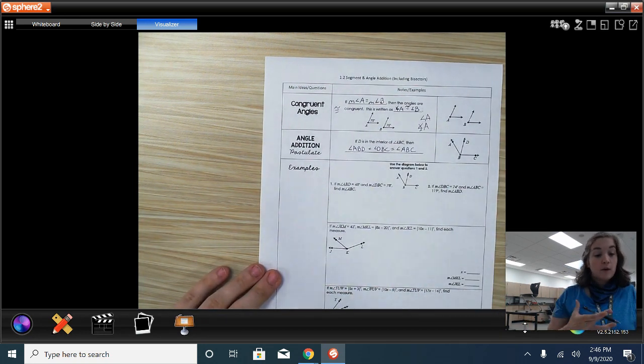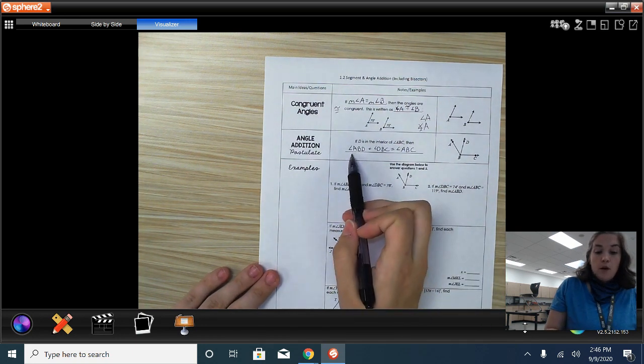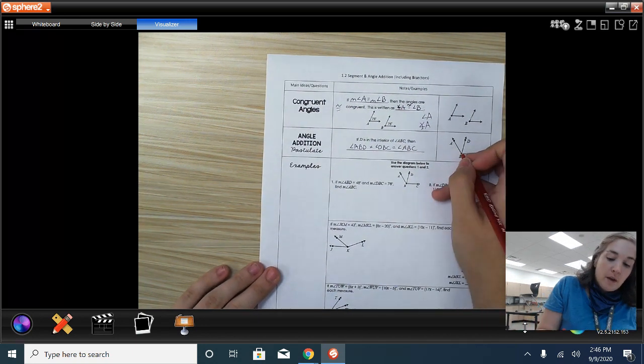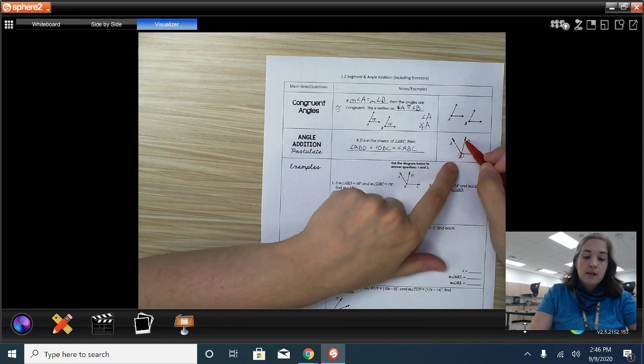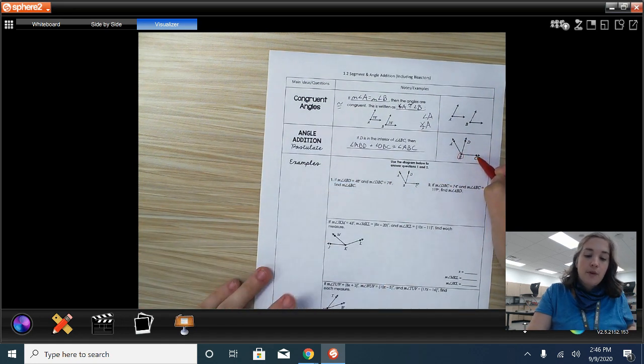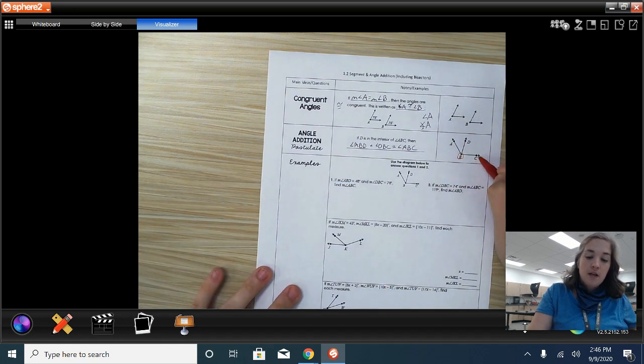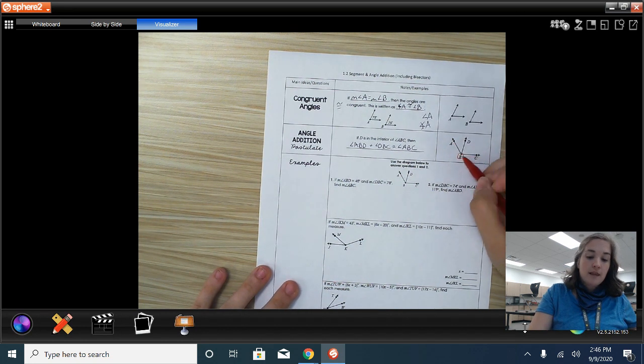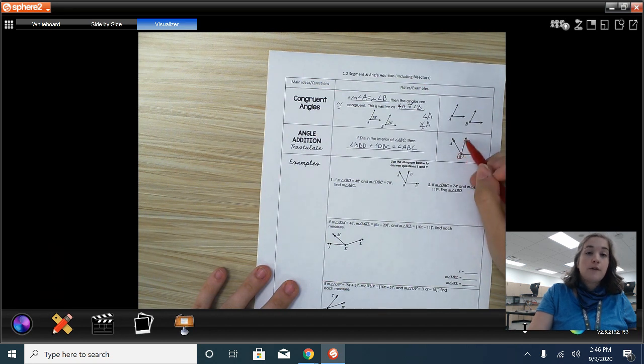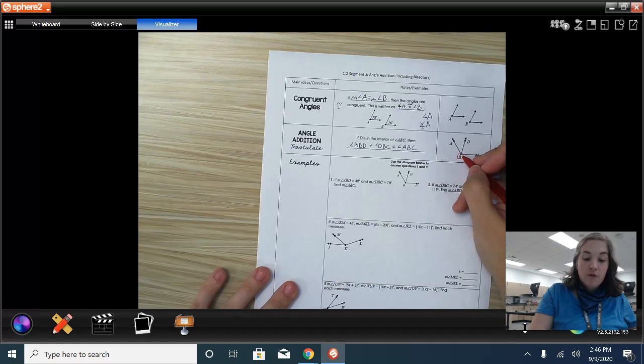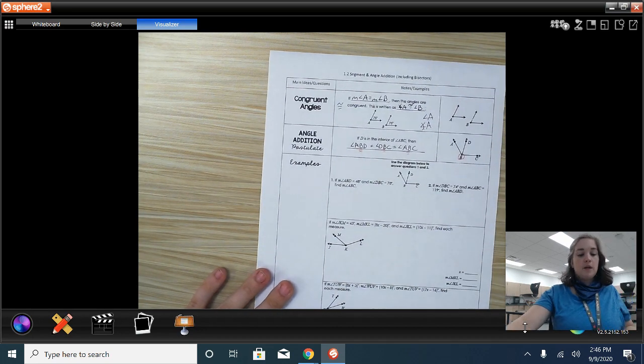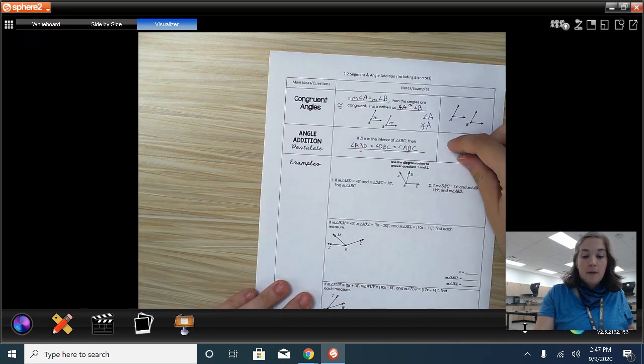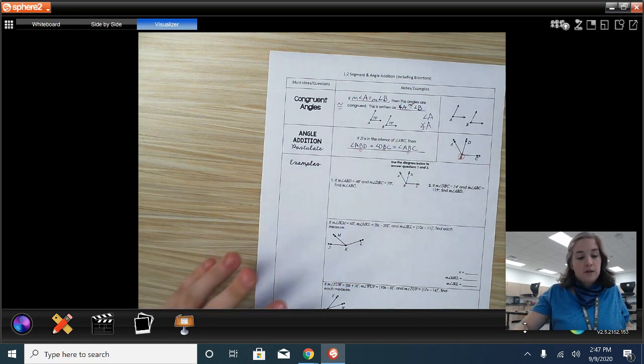We talked about segment addition. Now, we're going to talk about angle addition. And when we name an angle, it's really, really important. Whatever our vertex is goes in the middle. So, angle ABD plus angle DBC is equal to angle ABC. It doesn't matter if it's ABC or CBA. That is all the same angle. Or DBC or CBD. That's all the same angle. But the vertex needs to go in the middle. That's what's really important. You can see in all of these, our vertex is in the middle. So, this is really similar, right? If we have a part and a part, it makes the whole thing. That's all that this is saying.